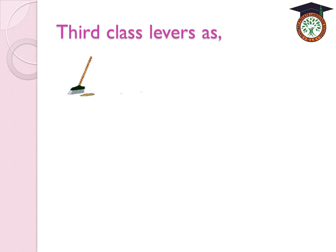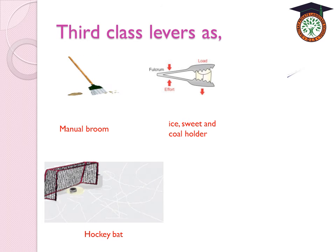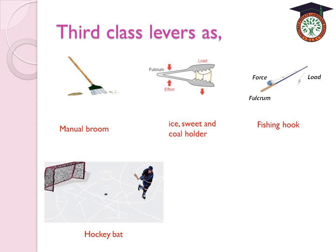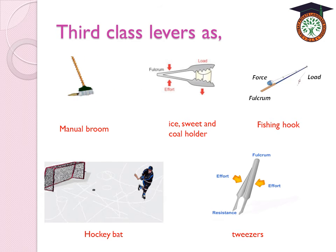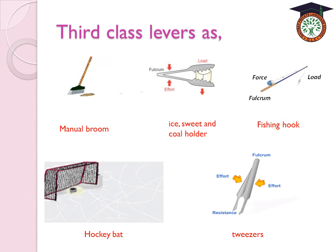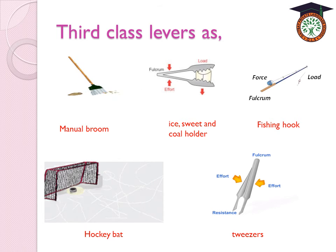Examples of third-class levers include the manual broom, the hockey bat, ice holder, sweet holder or coal holder, the fishing rod, and the tweezers. The tweezers are third-class levers because the effort force lies between the resistance force and the fulcrum. The ice holder is third-class because it has the effort force between the resistance force and the fulcrum.